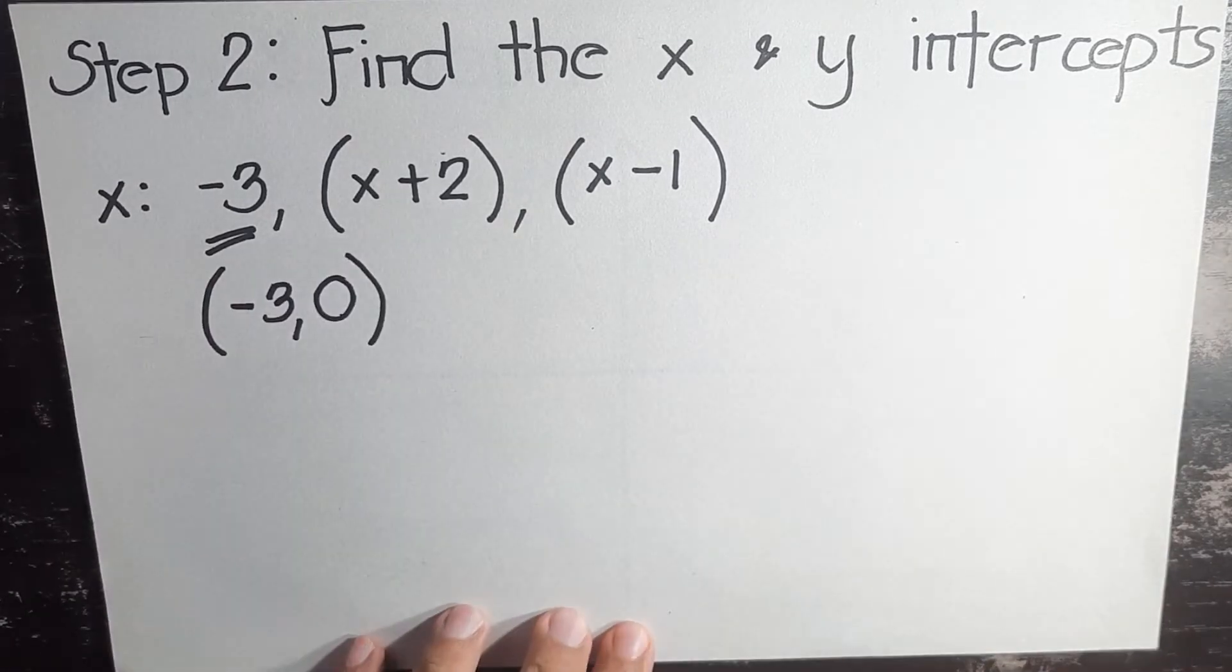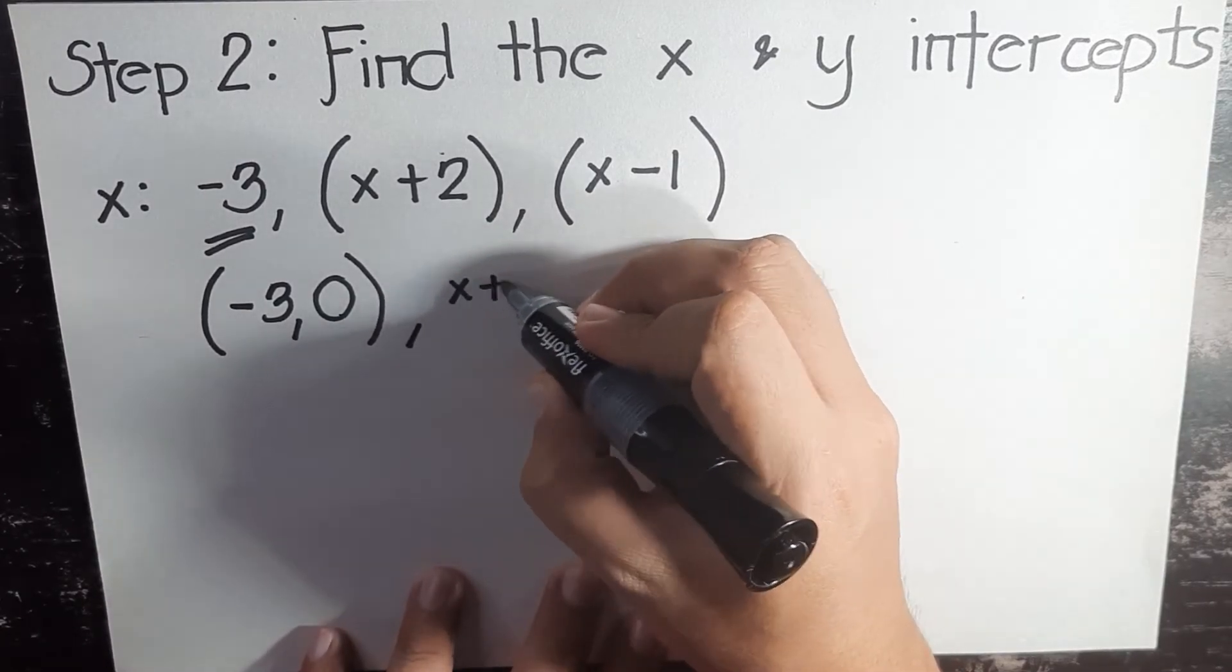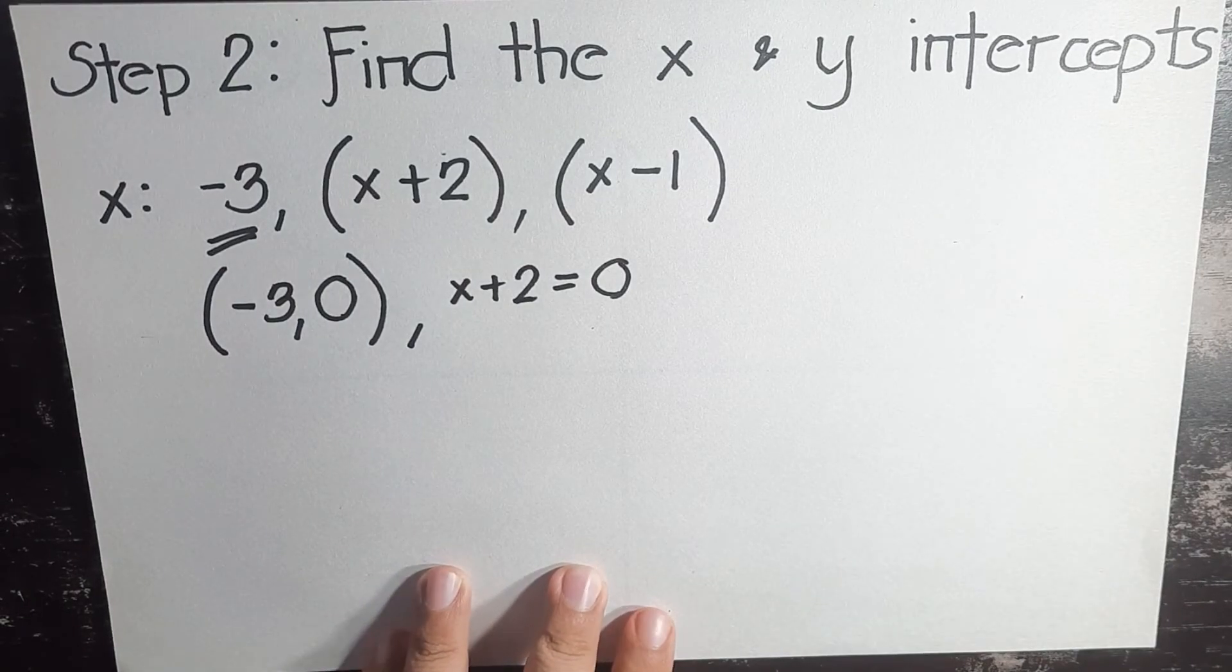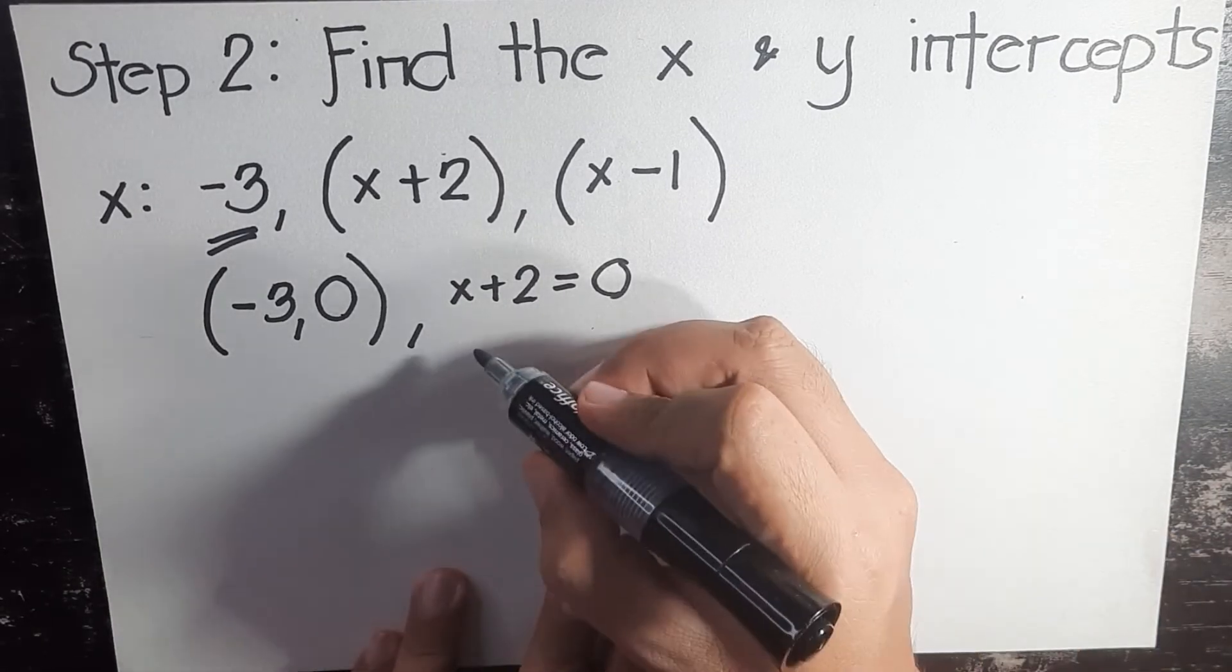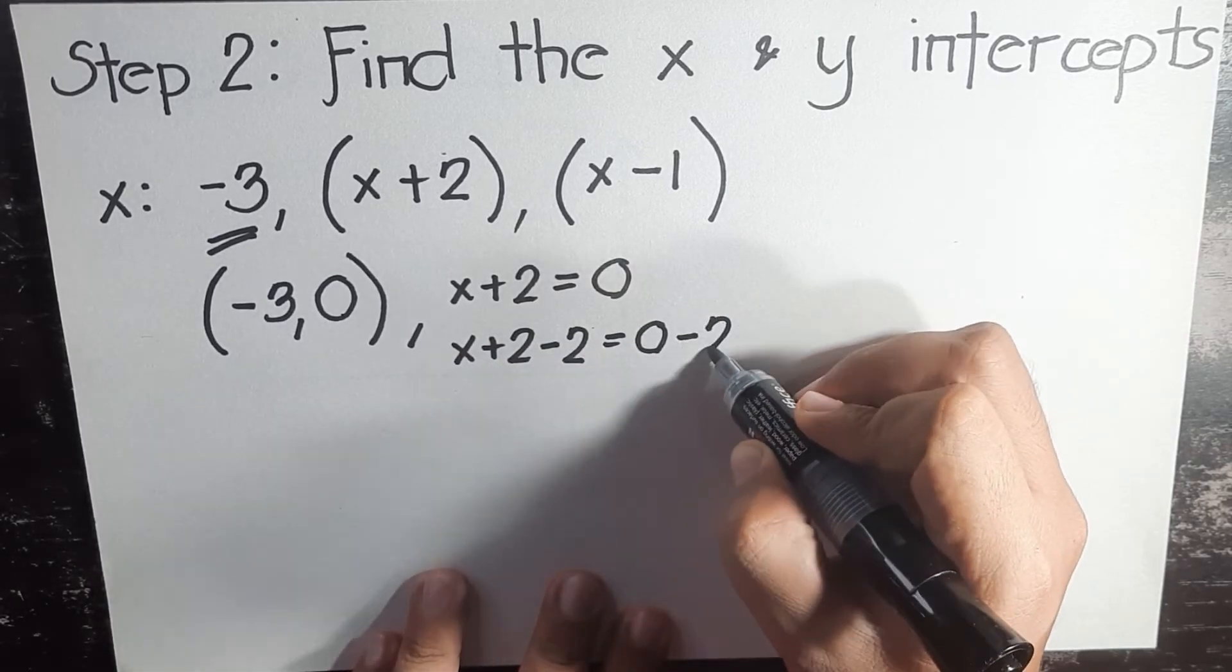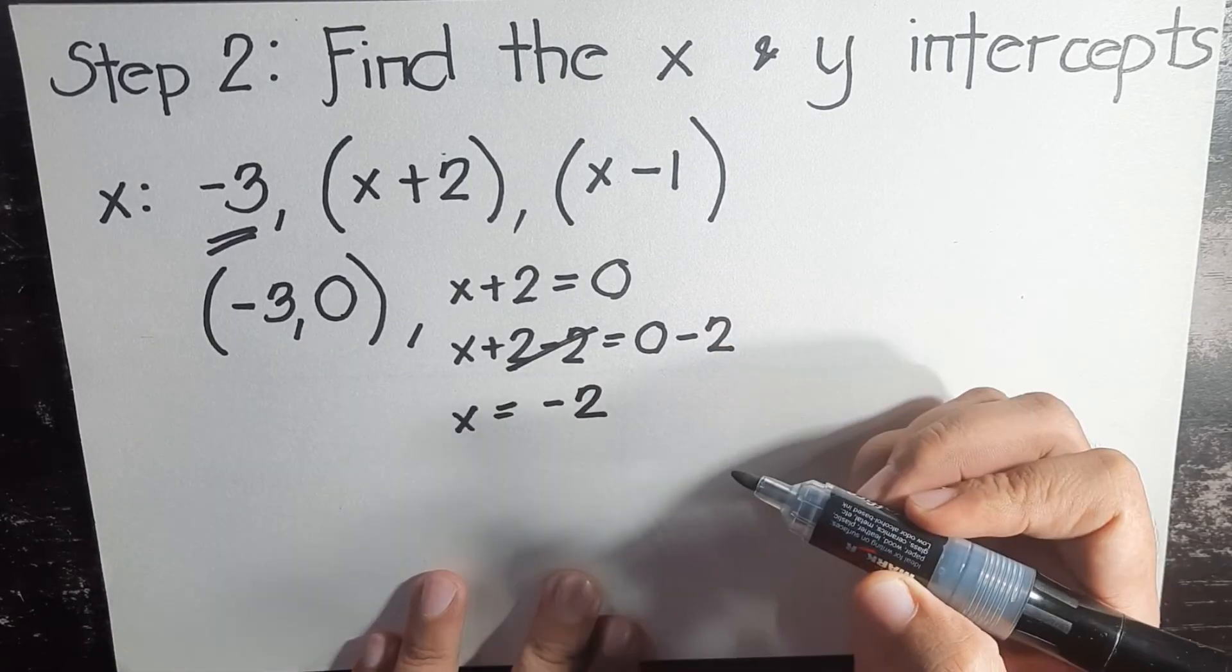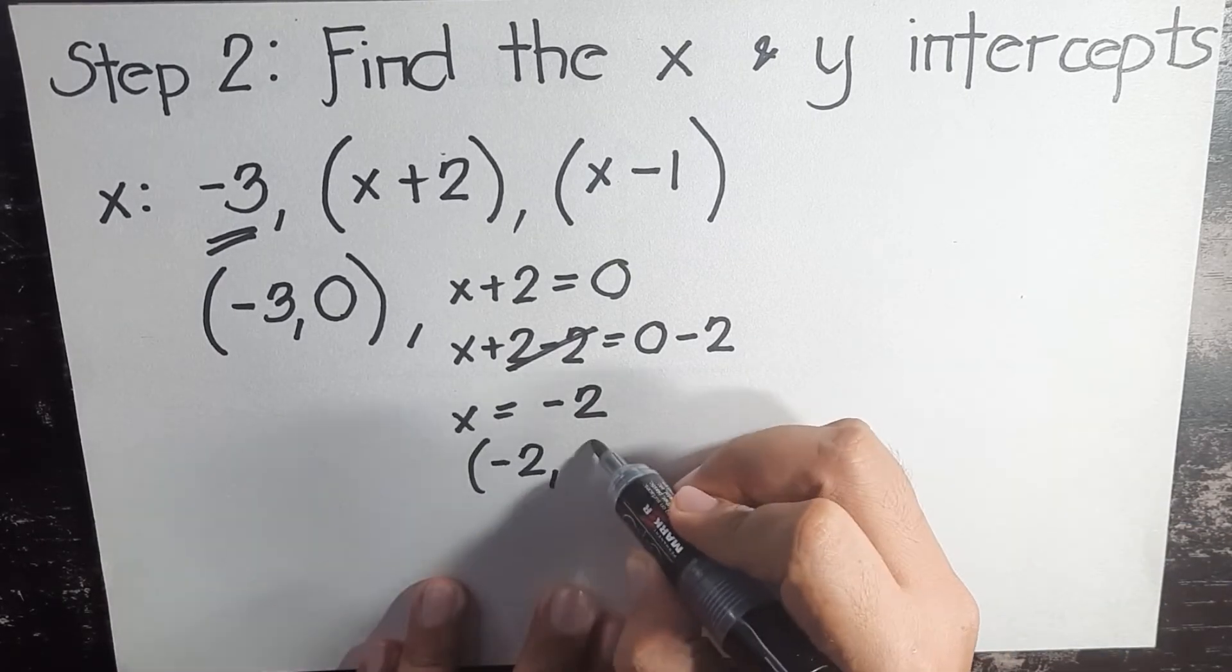What about x + 2? We'll equate it first to zero. x + 2 = 0. We will use the addition and subtraction property of equality to eliminate positive two, so we subtract two from both sides. x + 2 - 2 = 0 - 2. Cancel. x = -2. So your second coordinate is (-2, 0).